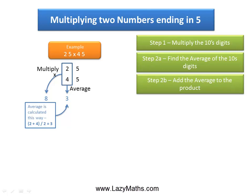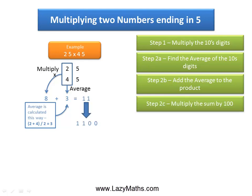The next step is to add the 8 and 3 together — the product 8 and the average 3. We get 8 plus 3 equals 11. Then we multiply the 11 by 100 and we get 1100.